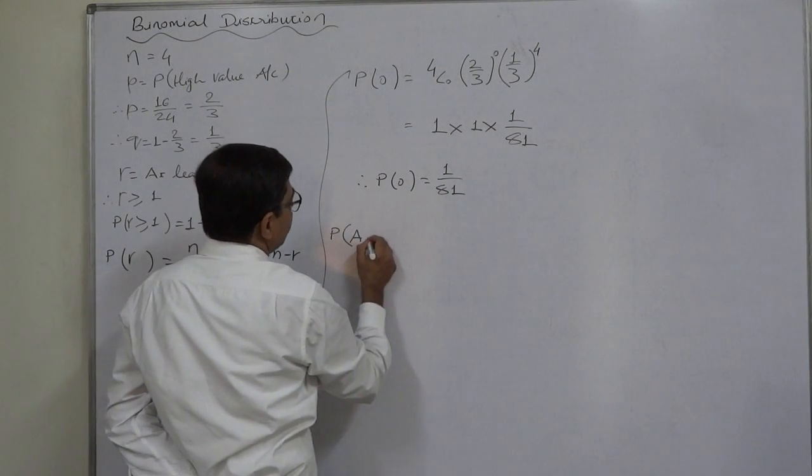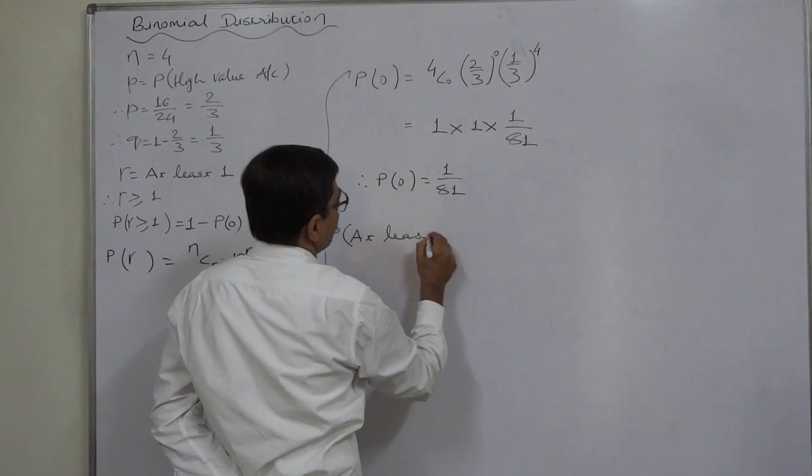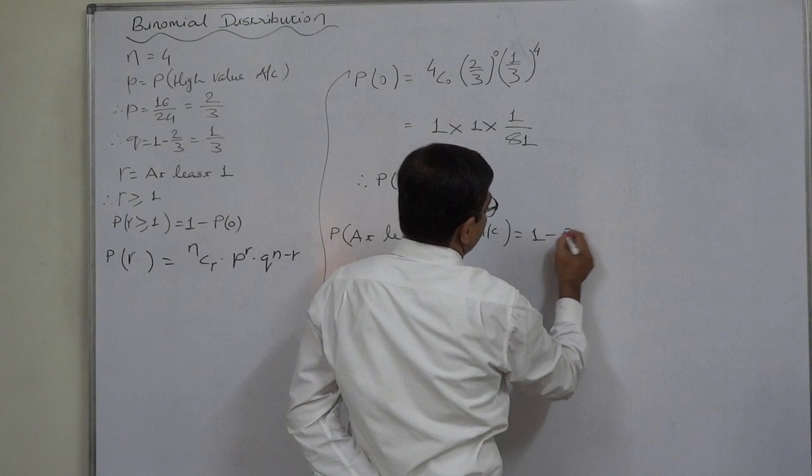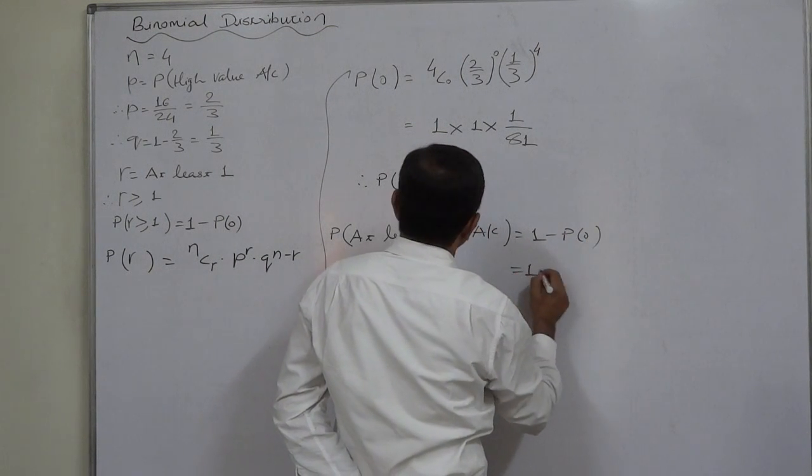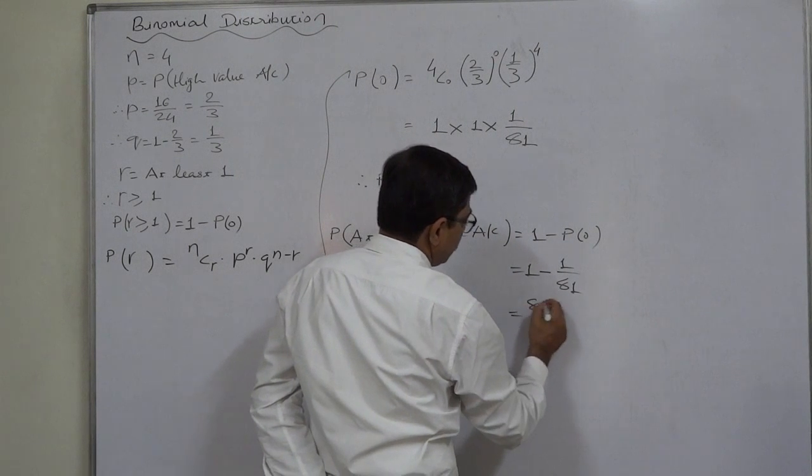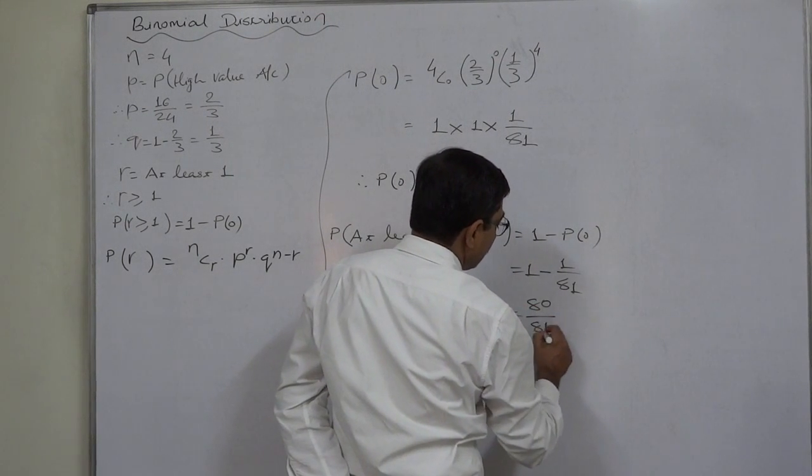So probability of 0 accounts is 1/81. But probability of at least one account of highly valued customers equals to 1 minus P(0). That is 1 minus 1/81. So the required probability comes to 80/81.